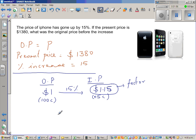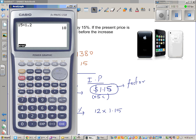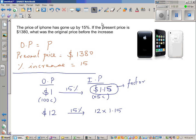So what it means is, suppose something cost $12 and it has increased by 15%. What you do is 12 times 1.15. Let us use a calculator - 12 times 1.15 is $13.80.